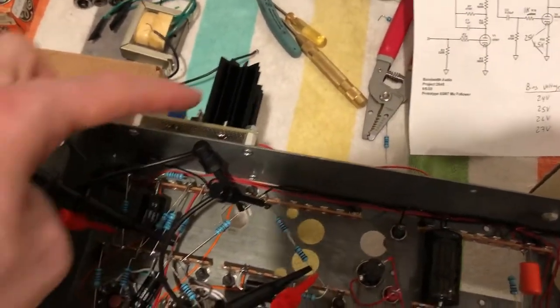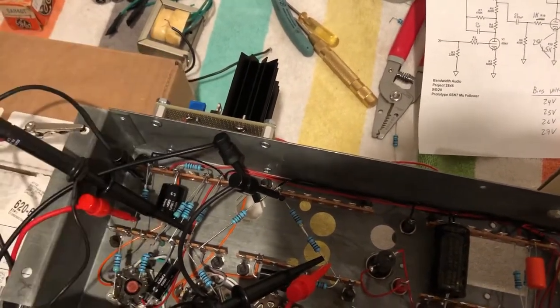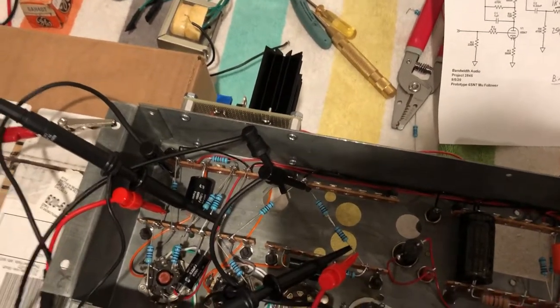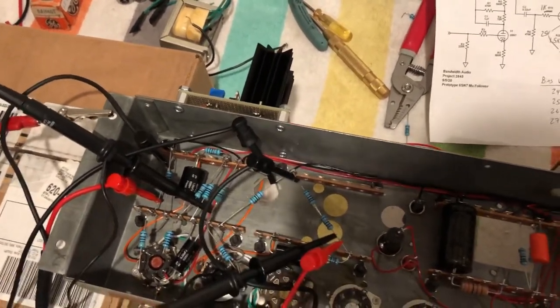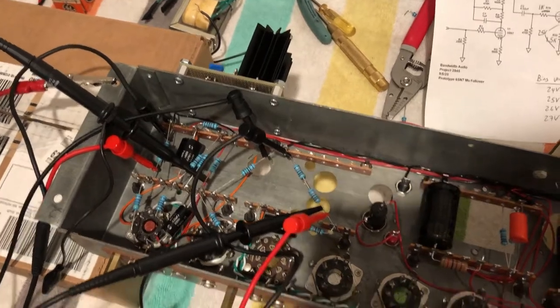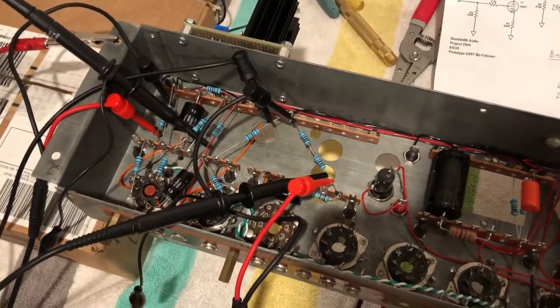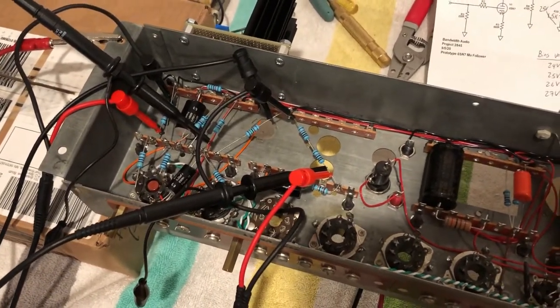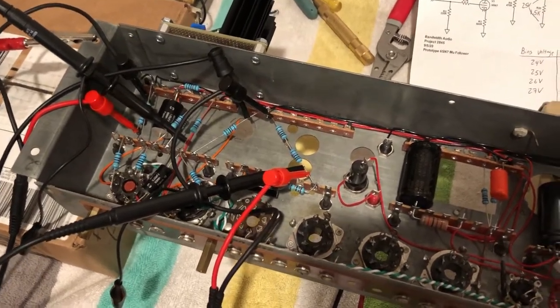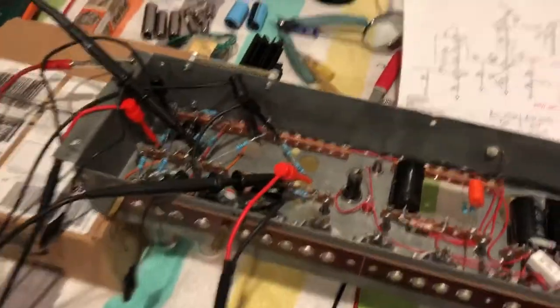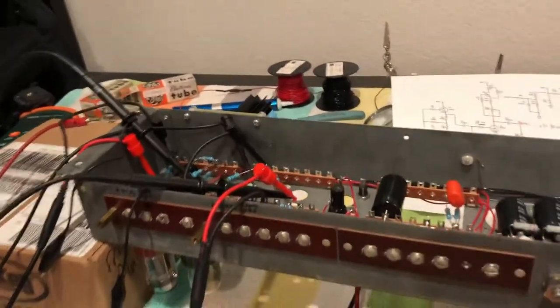You can see I've got my constant current source module attached to the side of the chassis. So that's where I can adjust that trim potentiometer and adjust our current through the 6AH4 second gain stage. But what I want to show here is how it performs with the audio precision.